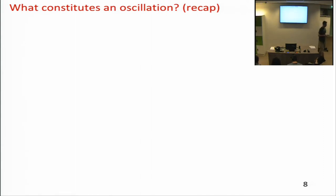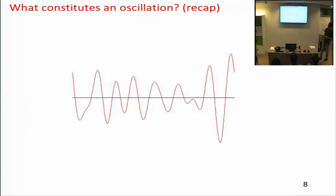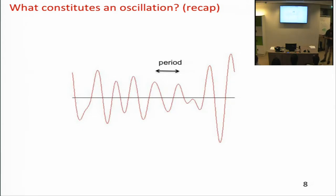To talk about coherence we need to recapitulate what an oscillation is. A signal is a wiggly line — an amplitude value defined at many consecutive time points, going up and down in a more or less regular way. We can define the period: the stretch of time between two peaks or troughs of the signal. If that's regular, we can talk about an oscillation with a particular frequency, which is one divided by the period.